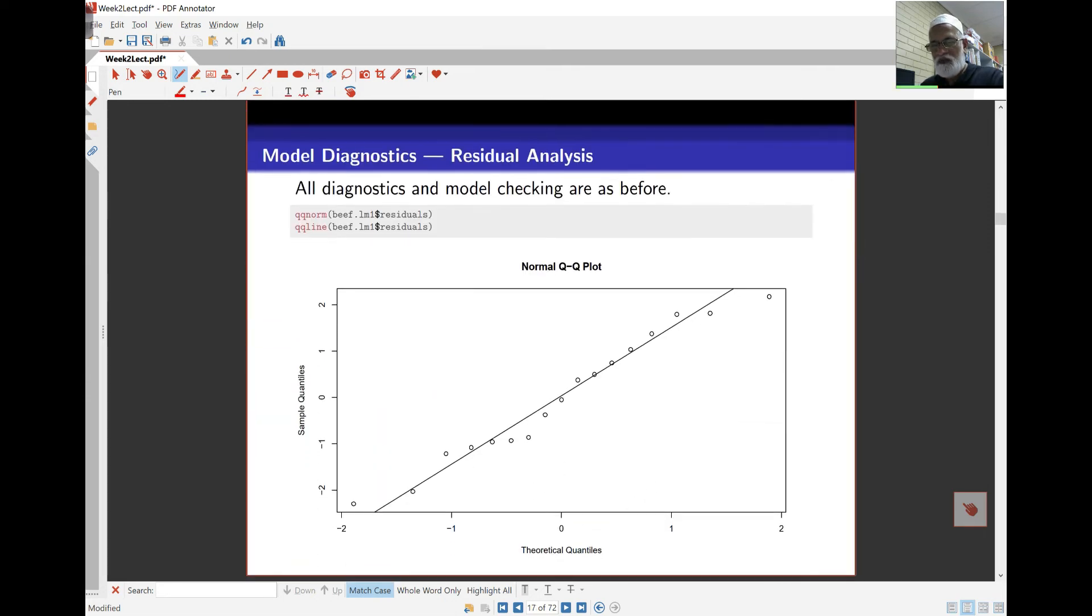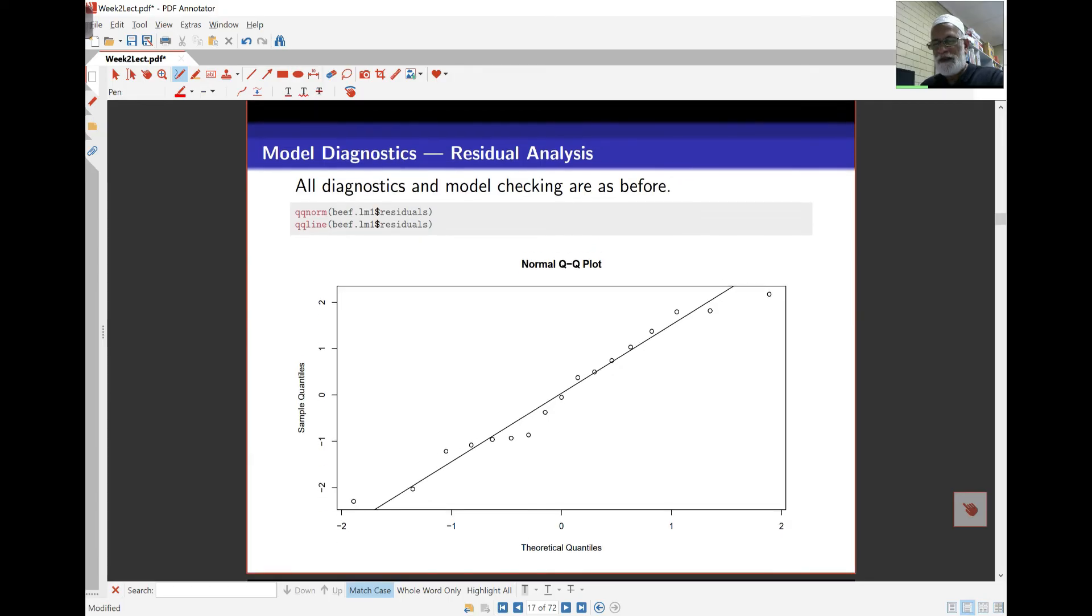Diagnostics. So we've plotted here the usual normal probability plots. And you find that it's not too bad. There's some sort of departures from straight line here, and at the end over here as well. But nothing serious. Nothing too serious. No strong departures from the straight line.